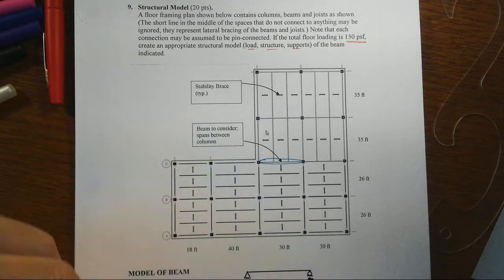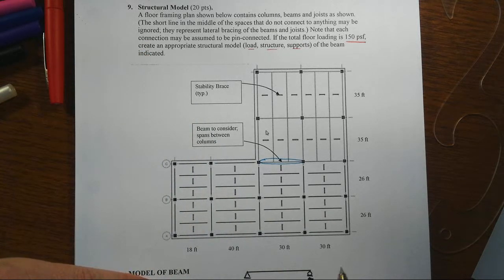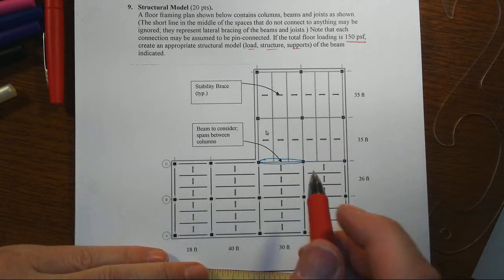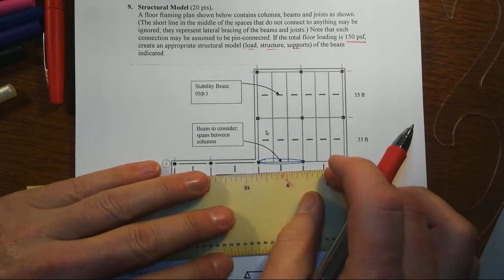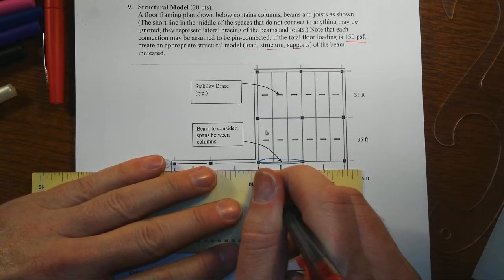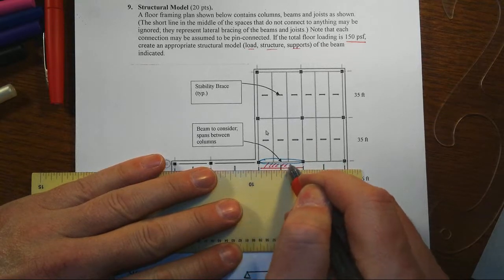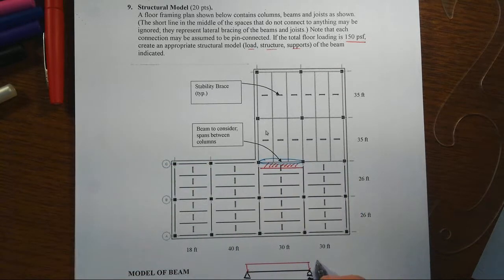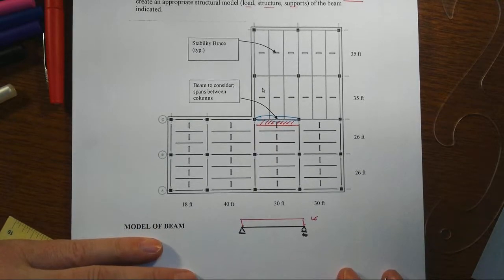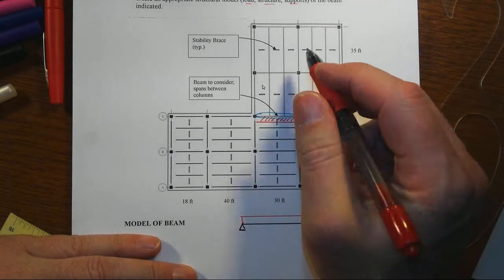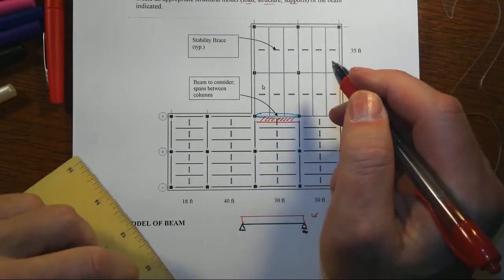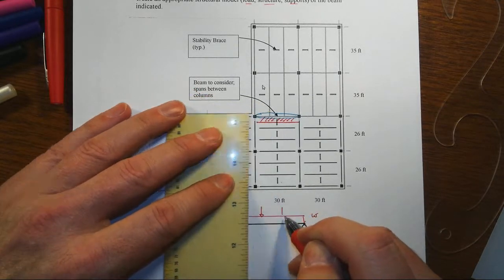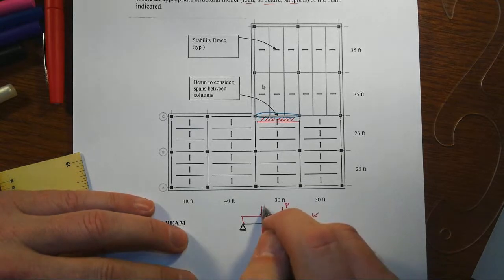We're told the beam has been connected, so a simply supported beam makes a lot of sense. And then we just got to look to see what frames into this particular beam. So we've got a series of parallel beams, which means we get a tributary width coming into the beam which is going to create a distributed force that is uniform. So that would be our W. And then we've got a couple of girders that frame in, and the reactions of those are going to create symmetrically placed point loads.